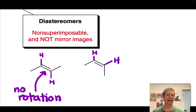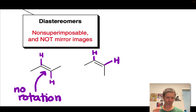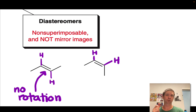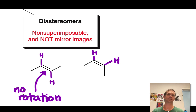By stereogenic alkene, I just mean an alkene that has a cis-trans issue, where if we exchange two of the groups at one of the carbons of the carbon-carbon double bond, we end up with a diastereomer — for example, a trans-type diastereomer if we make that switch starting from a cis-type structure.